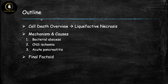Here's a look at our outline. We're going to start with an overview of cell death to see where liquefactive necrosis fits in. Then we're going to talk about the mechanism and causes of liquefactive necrosis — there are three main causes: bacterial abscesses, CNS ischemia, and acute pancreatitis — and then we're going to wrap up with one final factoid. All right, let's get started.